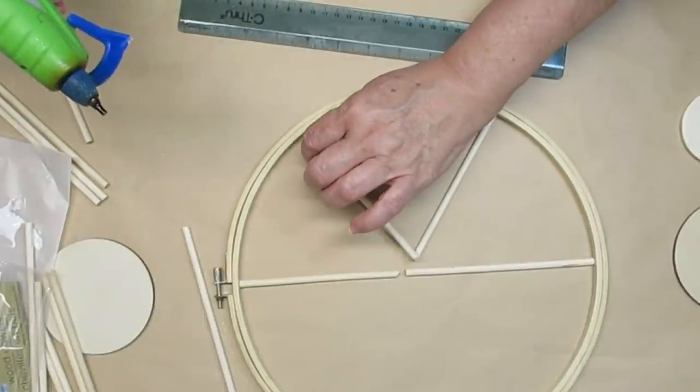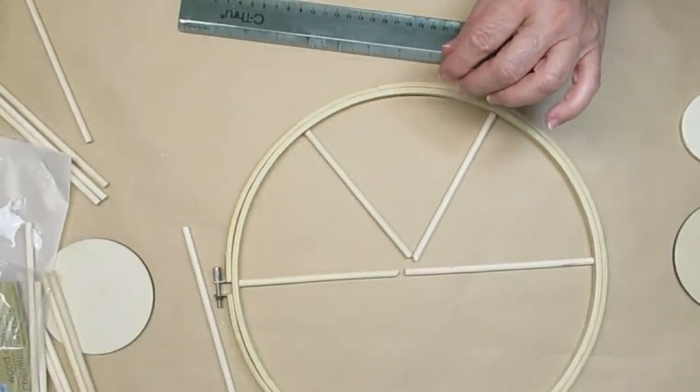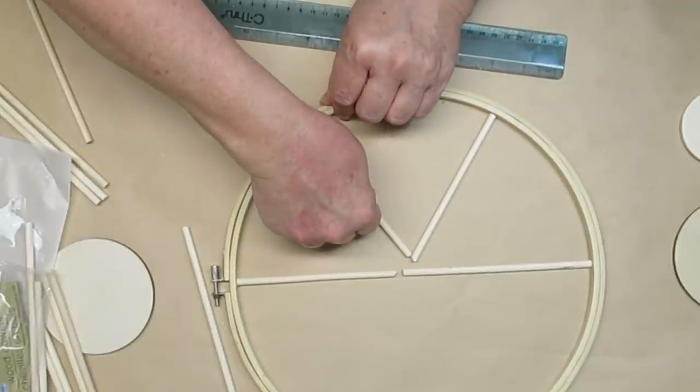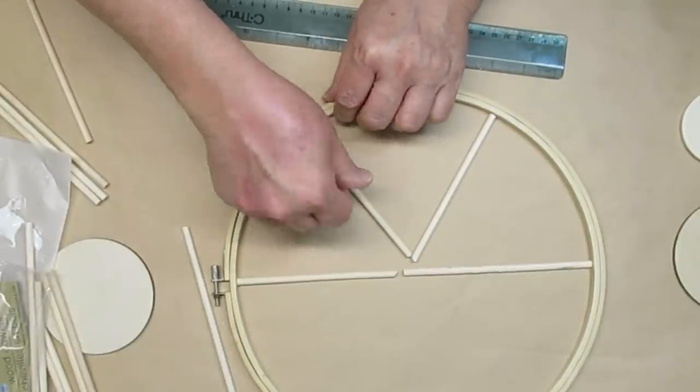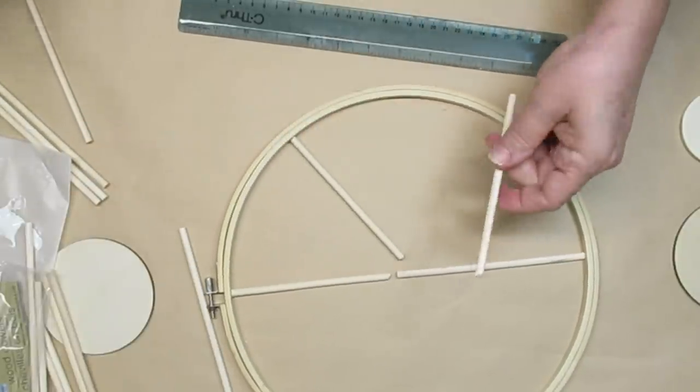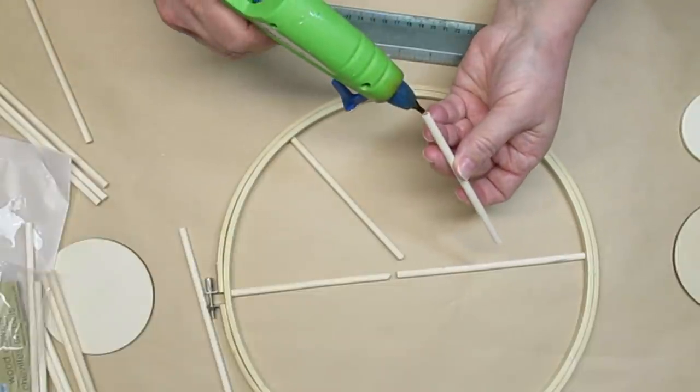I'm using just a tiny little dot of hot glue on the end of the dowel to attach it to the embroidery hoop. I don't want a whole lot of glue seeping out because I want to be staining this later and the glue will of course not take the stain.